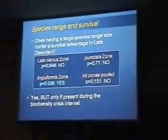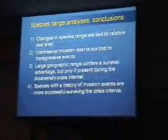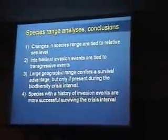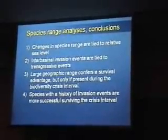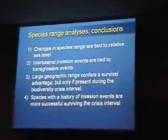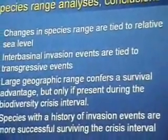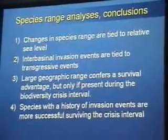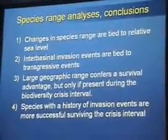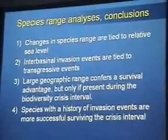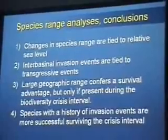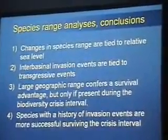It matters only what you're doing at the time that the environmental crisis occurs. So if we tie these two analyses together, we can see species ranges are related to sea level, and invasion events are also related to sea level. Species that have large ranges or that are expanding their ranges during the crisis interval are those that survive. A key point is that these species with invasion events are surviving, and invasive species comprise a high proportion of the fauna that survives compared to the original native species.